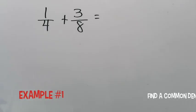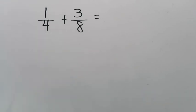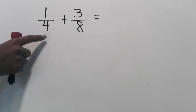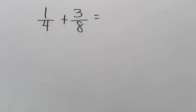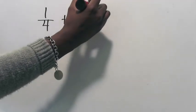In this first example we are adding 1/4 plus 3/8. Right away you should recognize that you cannot add these two fractions because they have unlike denominators — one has a denominator of 4, the other has a denominator of 8. We have to change that so they have common denominators. The first strategy is just finding any common denominator: take your two denominators, 4 and 8, and multiply them together. 4 times 8 is 32.